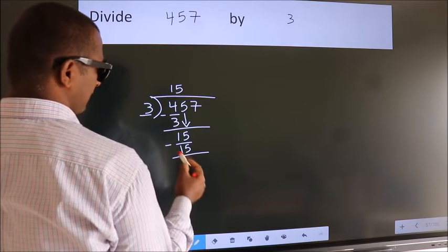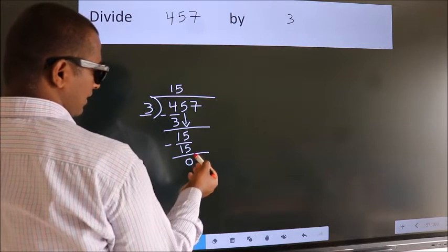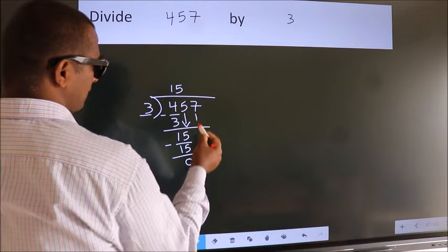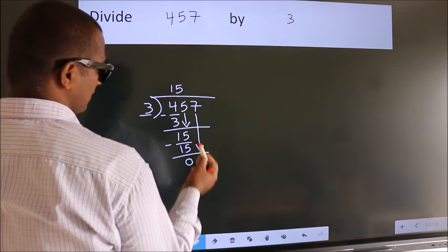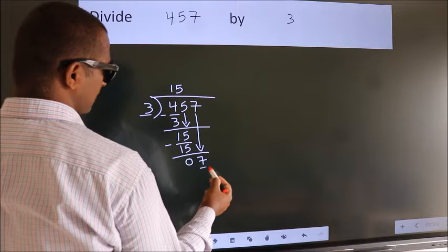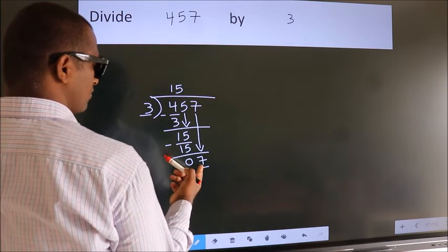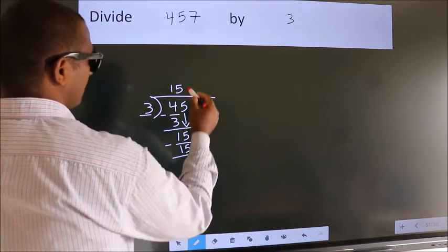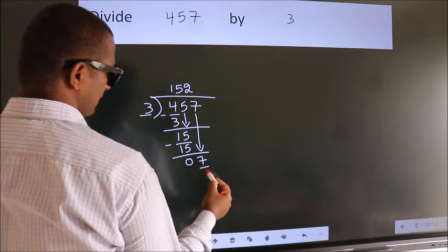Now, we subtract. We get 0. After this, bring down the beside number. So, 7 down. So, 7. A number close to 7 in 3 table is 3 2s, 6.